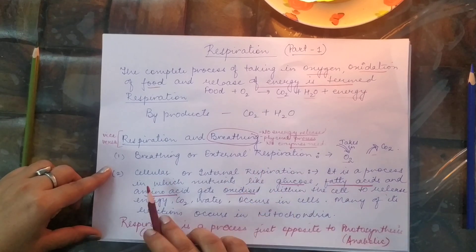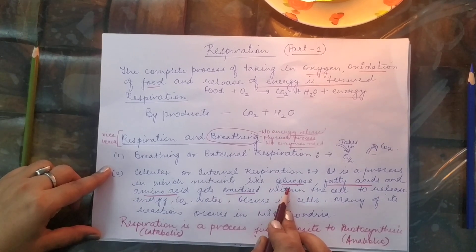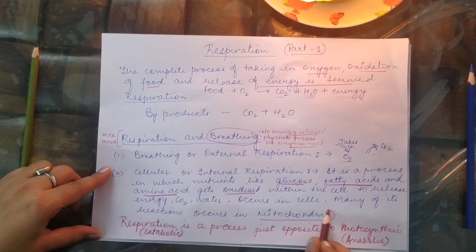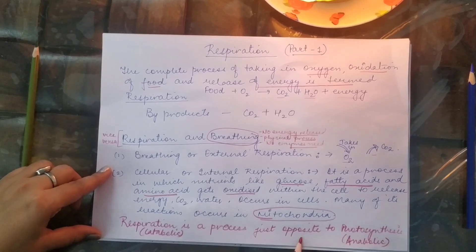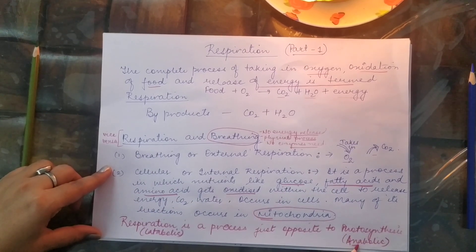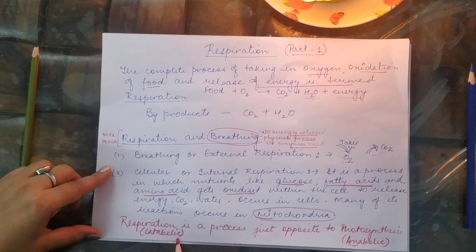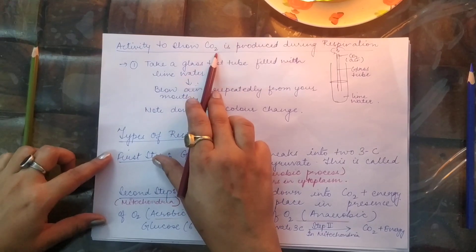Respiration can be categorized into breathing, also called external respiration, and cellular or internal respiration, which is carried out in each and every cell. Simpler food molecules are oxidized — meaning oxygen is added — and broken down into energy in the mitochondria. Comparing respiration and photosynthesis: photosynthesis is an anabolic process forming complex substances from simpler ones, whereas respiration is a catabolic process breaking down larger molecules to release energy.